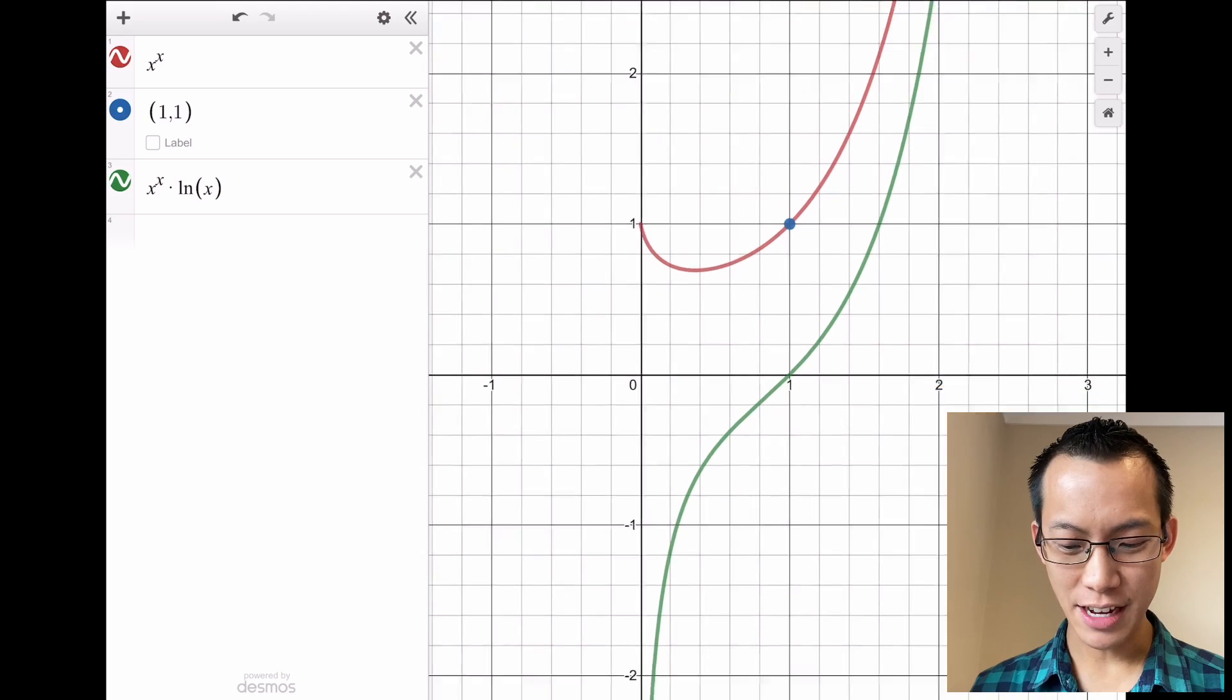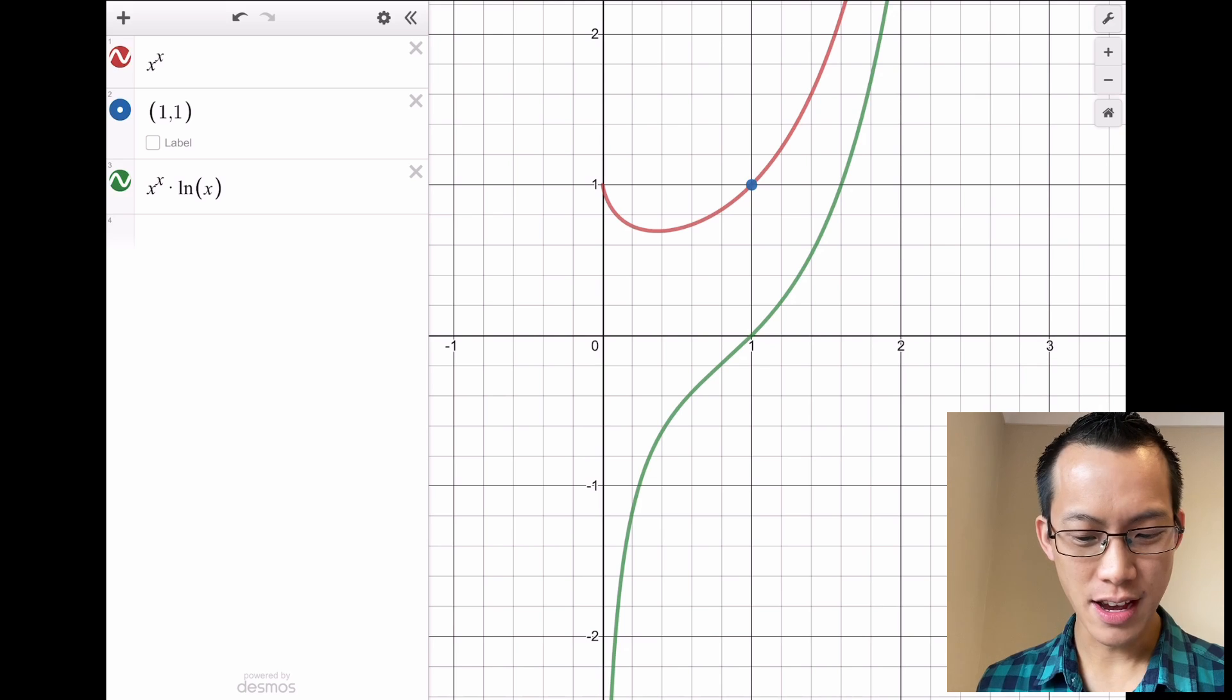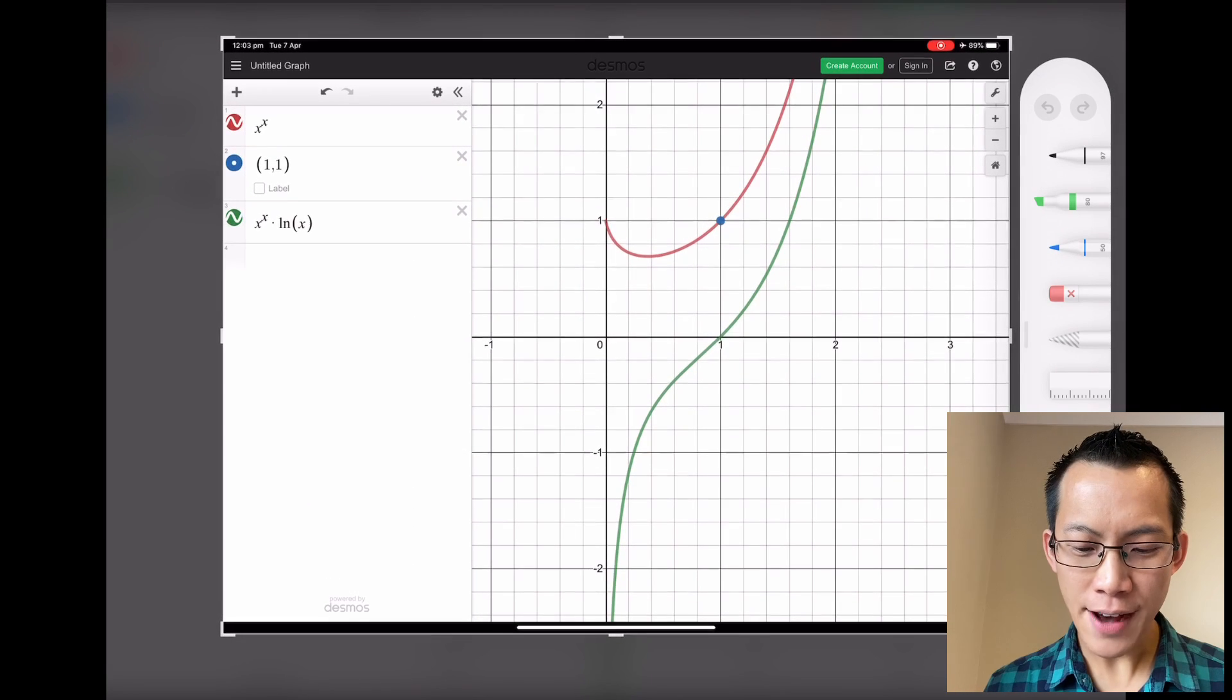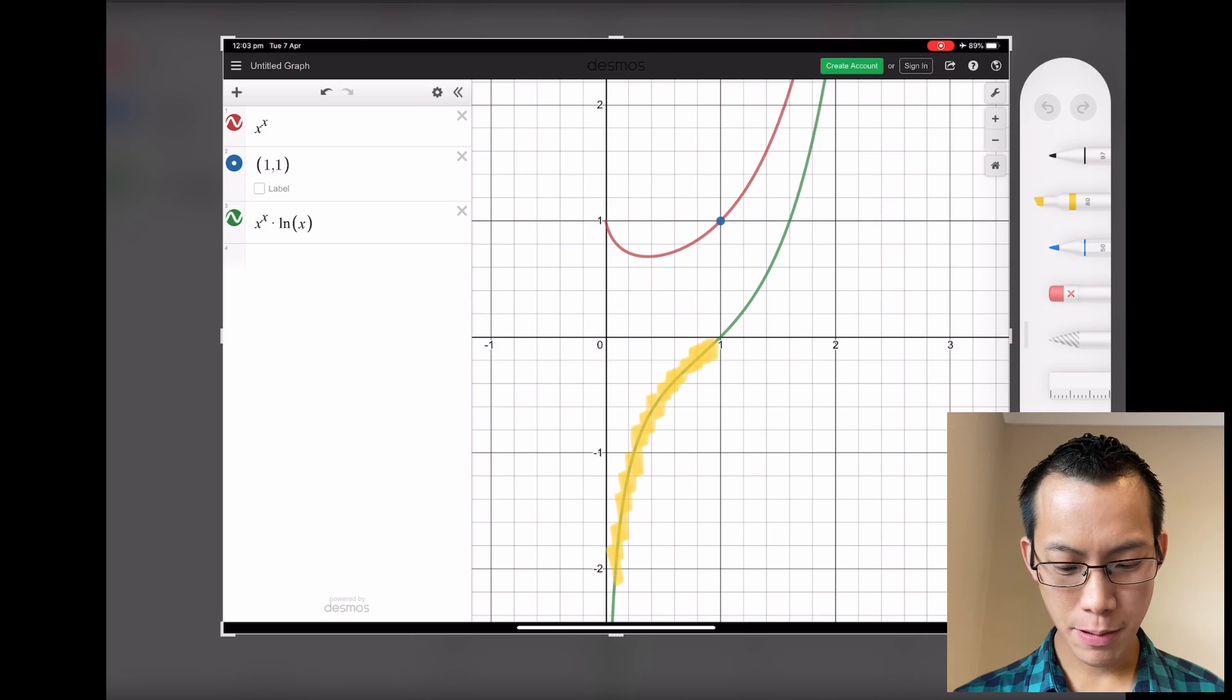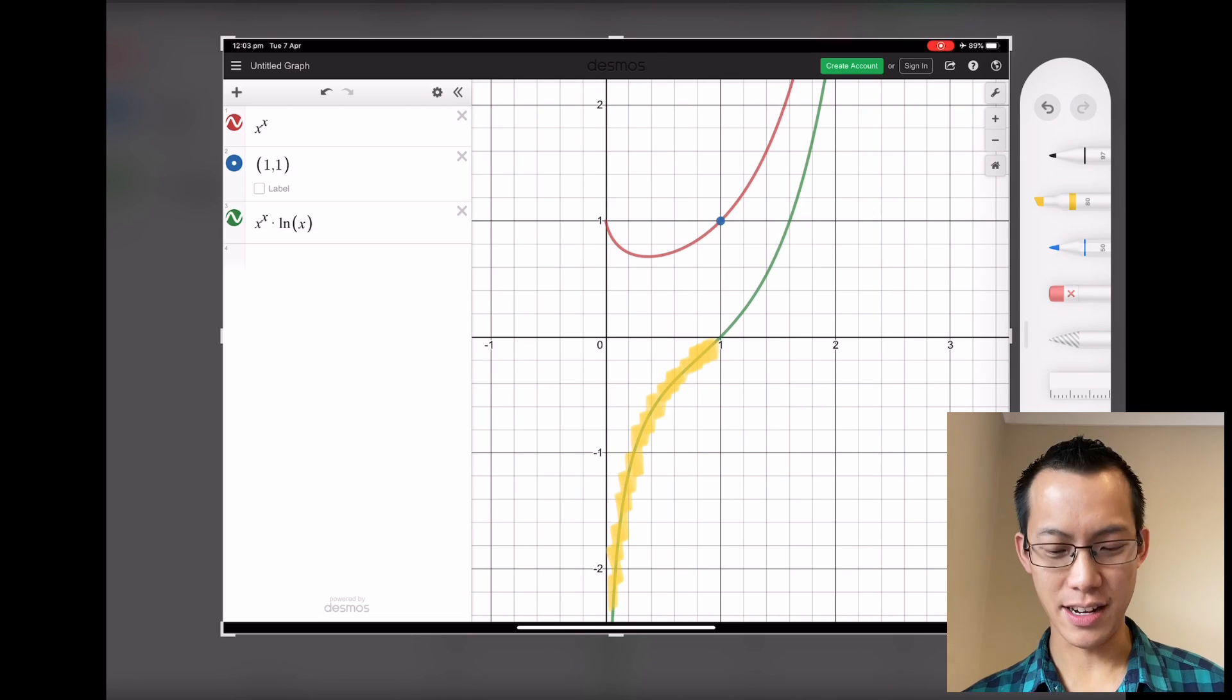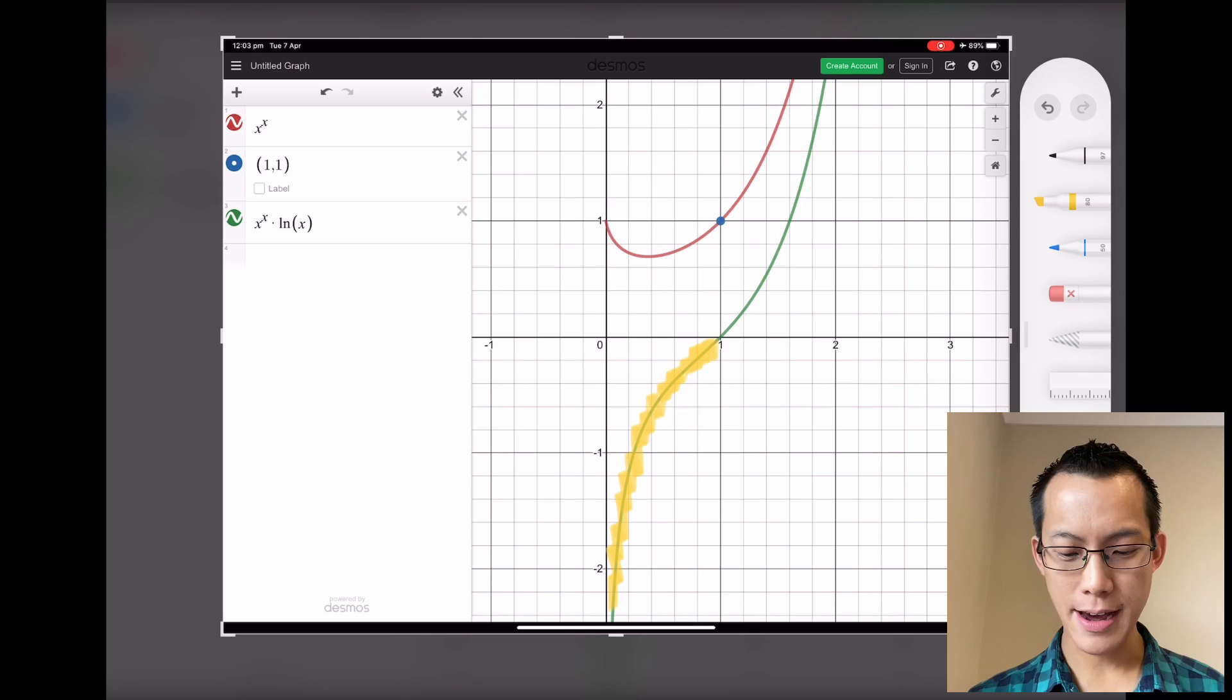I do have part of it that's decreasing, but it doesn't quite match, does it? Let's take a screenshot so we can draw on this. If I have a look, where is the gradient function negative? This part down here—this is where the gradient function is negative. Therefore, I would expect that the function it came from should be decreasing for this whole time.